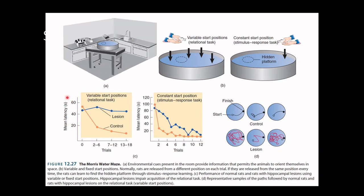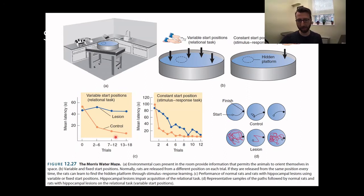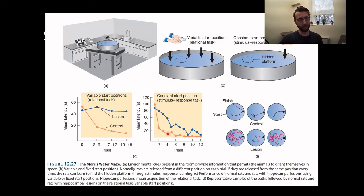On these graphs showing mean latency — how long it takes the rat to find the platform across trials — if the animal is learning, the latency should decrease. In the variable position task, which is hippocampus-dependent, the lesioned animals never improve, whereas control animals with an intact hippocampus get faster and faster. However, in the constant start position stimulus-response task, both the lesion and control animals improve at a similar rate — lesion animals are a bit slower but eventually reach the same speed. Sample traced paths also show that animals learn over time to navigate smoothly, whereas lesion animals do not.